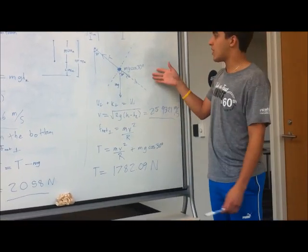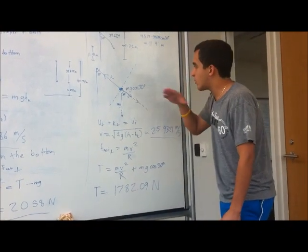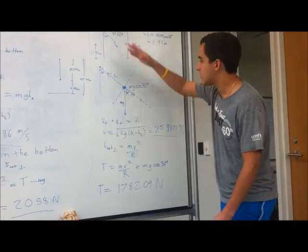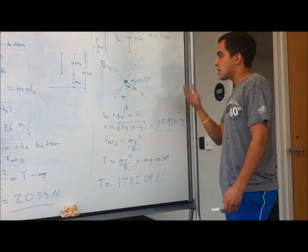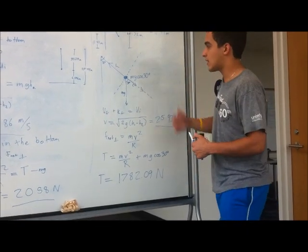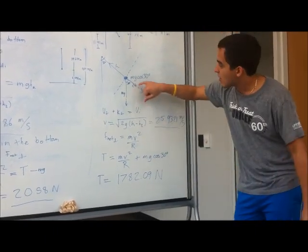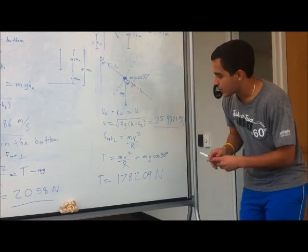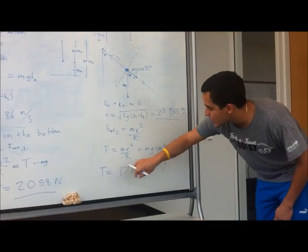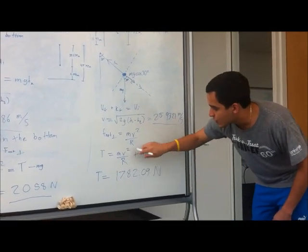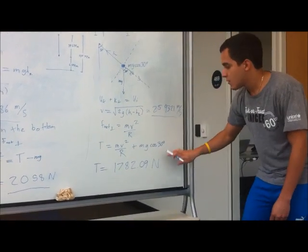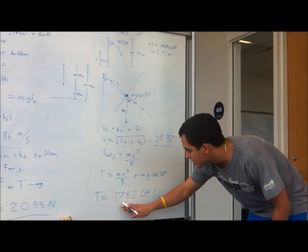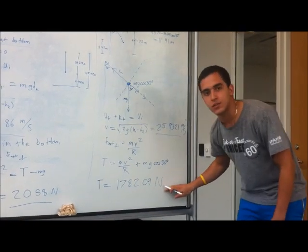Now, with the free body diagram, we see that we have tension, a perpendicular component, and an opposite force acting on the body, along with gravity. So here, tension equals mv² over r plus mg cosine 30, which gives us 1782.09 newtons.